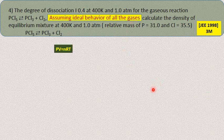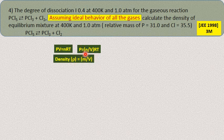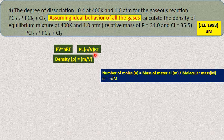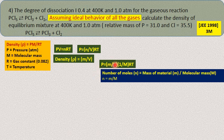Since it is a mixture of PCl5, PCl3, and Cl2, we need the average molecular mass M = total mass / total moles. From the ideal gas equation, P = (n/V)RT, and density = mass/volume. Substituting n = mass/M, we get density = PM/RT. For this formula: P is pressure in atm, M is average molecular mass, R = 0.082 L·atm/mol·K, T is temperature in Kelvin.